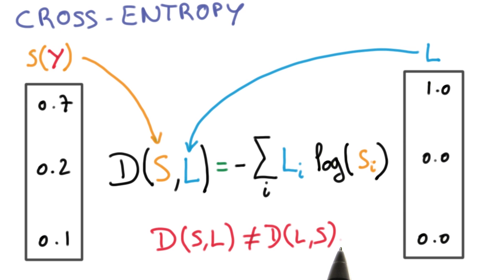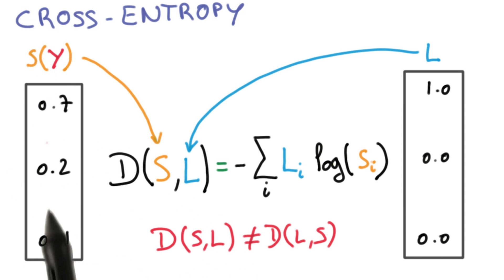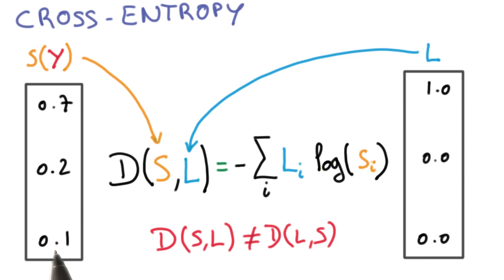Be careful, the cross entropy is not symmetric and you have a nasty log in there, so you have to make sure that your labels and your distributions are in the right place. Your labels, because they're one-hot encoded, will have a lot of zeros in them, and you don't want to take the log of zeros. For your distribution, the softmax will always guarantee that you have a little bit of probability going everywhere, so you never really take a log of zero.